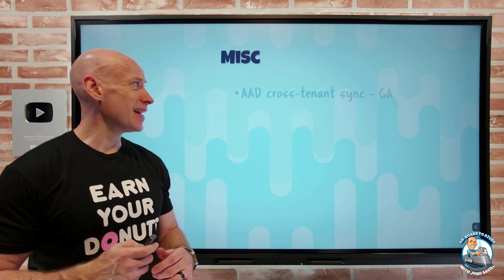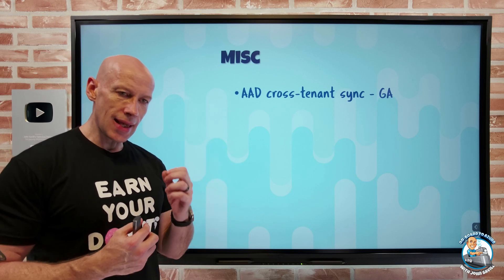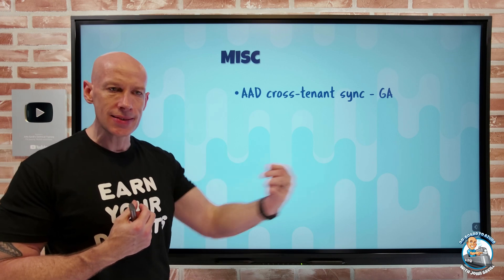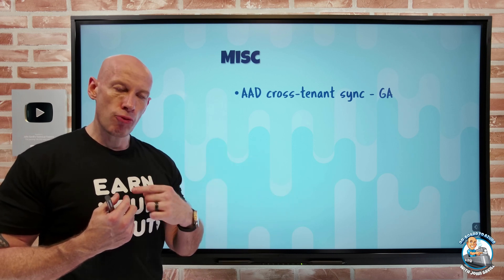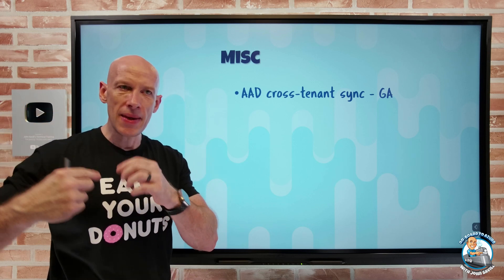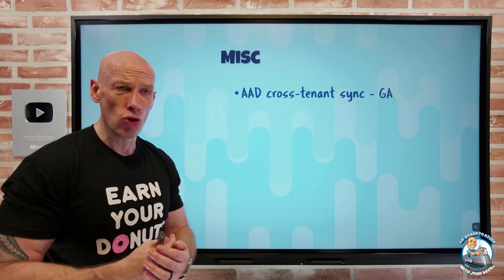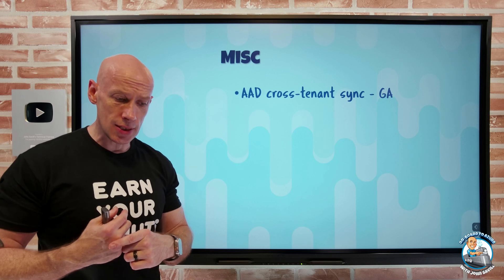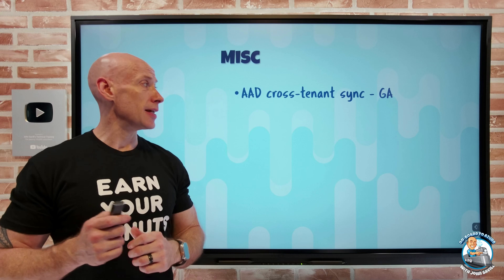In miscellaneous news, Azure AD cross-tenant sync has gone GA. This is the ability for an organization with multiple Azure AD tenants — maybe from an acquisition — to automate the process of users from one tenant being added as guests to another tenant, being made part of groups. It can work in both directions by setting up two cross-tenant sync configurations. Now that it's GA, you can feel comfortable using it in production.